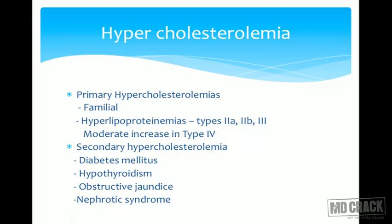Secondary hypercholesterolemia is seen in diabetes mellitus, due to differences in the insulin-to-glucagon ratio leading to increased cholesterol synthesis. Hypothyroidism is another cause — remember, thyroxine is a regulator of HMG-CoA reductase, so in hypothyroidism we get hypercholesterolemia. Obstructive jaundice also causes hypercholesterolemia because cholesterol is not being excreted into the intestine.